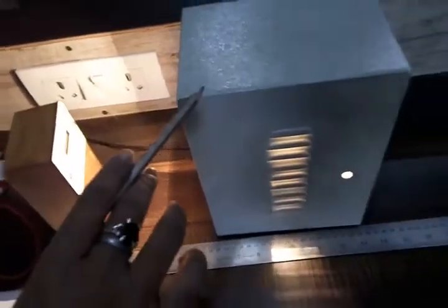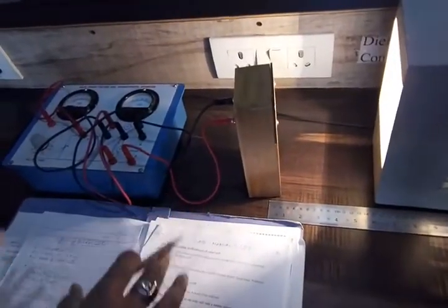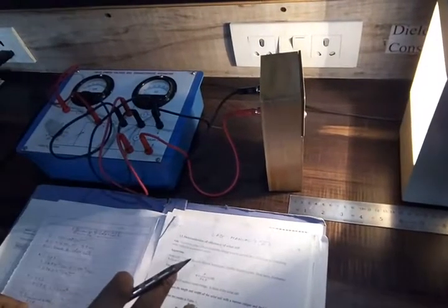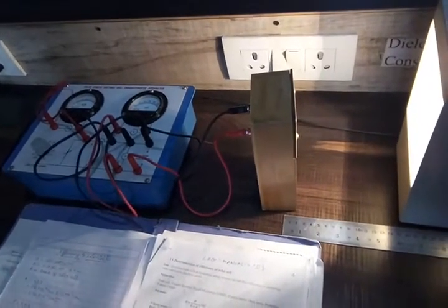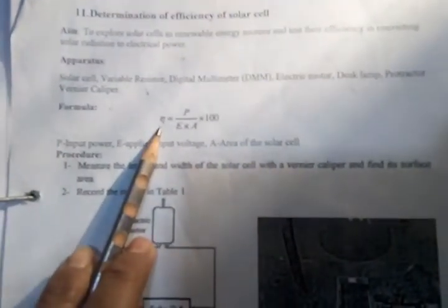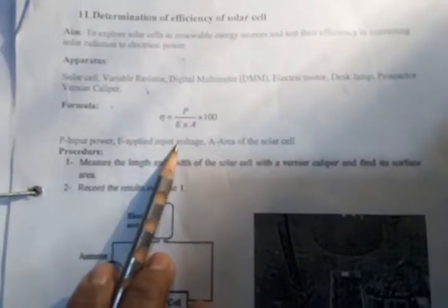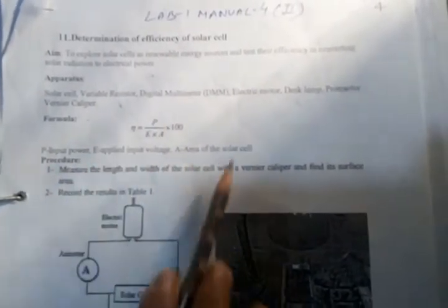For the source, we are using a 100-watt bulb so that we can use it as the light source for the solar cell. Now, to find out the efficiency, we need to know how to calculate it. As per the manual, the formula is: eta (efficiency) = P / (E × A) × 100, where P is the output power, E is the applied input illuminance, and A is the area of the solar cell.